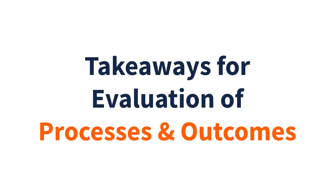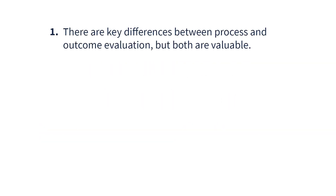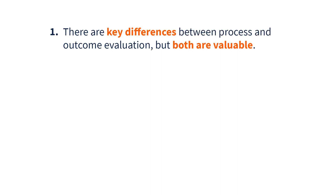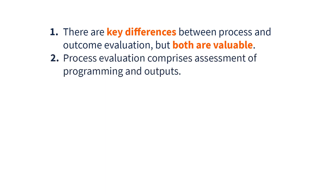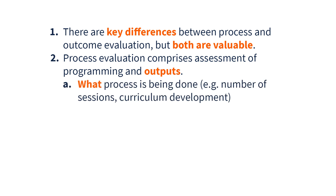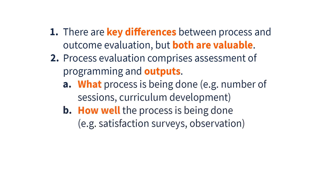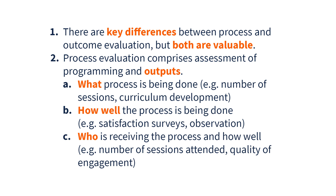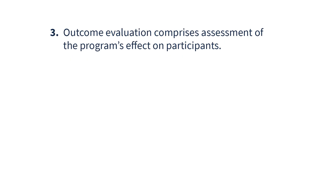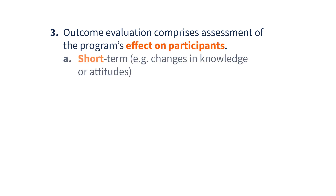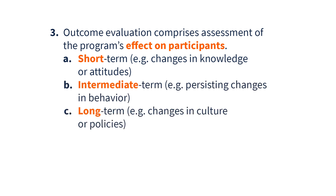Here are some takeaways for evaluation with regard to processes versus outcomes. First, there are key differences between process and outcome evaluation — each serves its own purpose, but both are valuable. Process evaluation comprises assessment of programming and outputs: what process is being done, how well the process is being done, and who is receiving the process and how well. Outcome evaluation comprises assessment of the program's effects on participants, broken down into short, intermediate, and long-term.